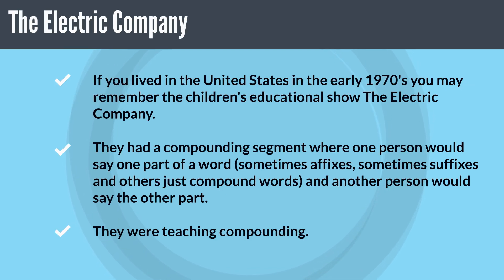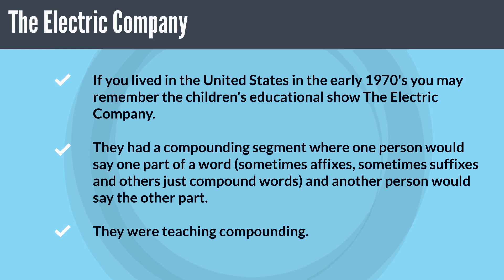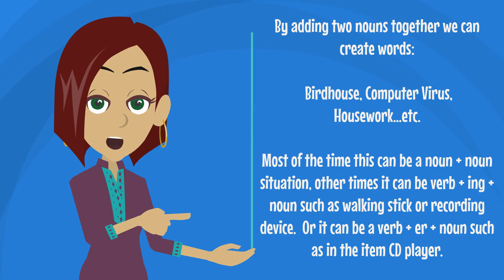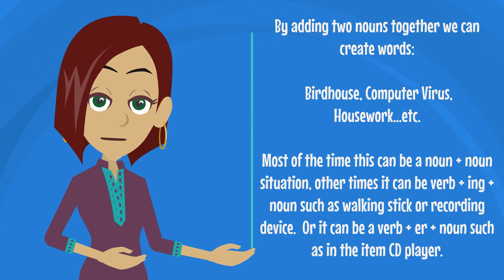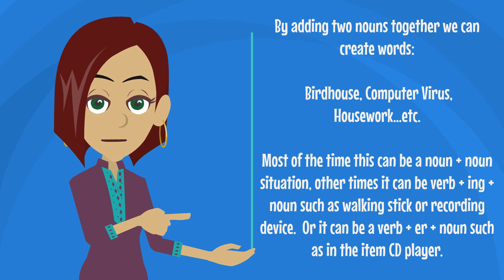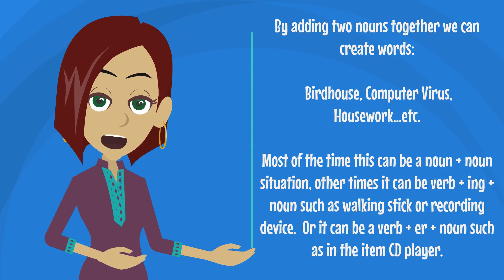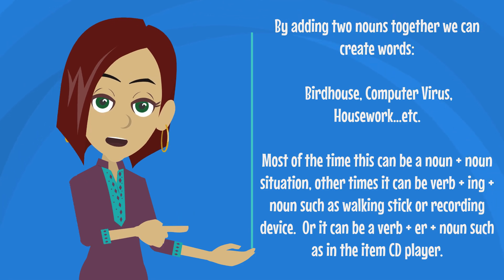If you lived in the United States in the early 1970s, you may remember the children's educational show The Electric Company. They had a compounding segment where one person would say one part of a word — sometimes affixes, sometimes suffixes, and other times just compound words — and another person would say the other part. By adding two nouns together we can create words like birdhouse, computer virus, housework, etc. Other times it can be verb + -ing + noun, such as 'walking stick' or 'recording device,' or verb + -or + noun, such as 'CD player.'